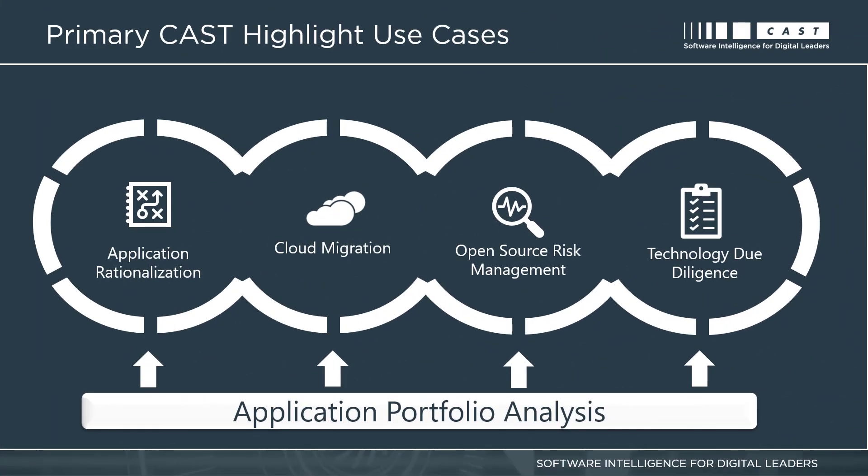CAST Highlight supports four primary use cases: application rationalization, or identifying opportunities for consolidation and retirement; cloud migration, or segmenting and prioritizing a portfolio of applications to identify good candidates for migrating to the cloud; open source risk management, or performing software composition analysis to identify open source risks; and finally, technology due diligence to assess application portfolios, especially in scenarios such as an M&A transaction.